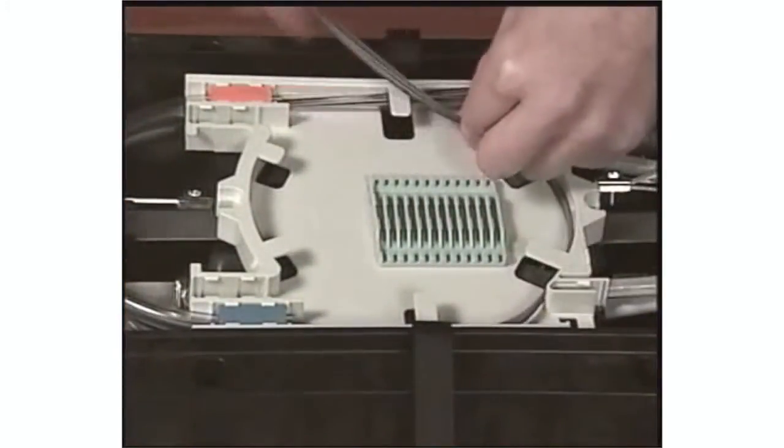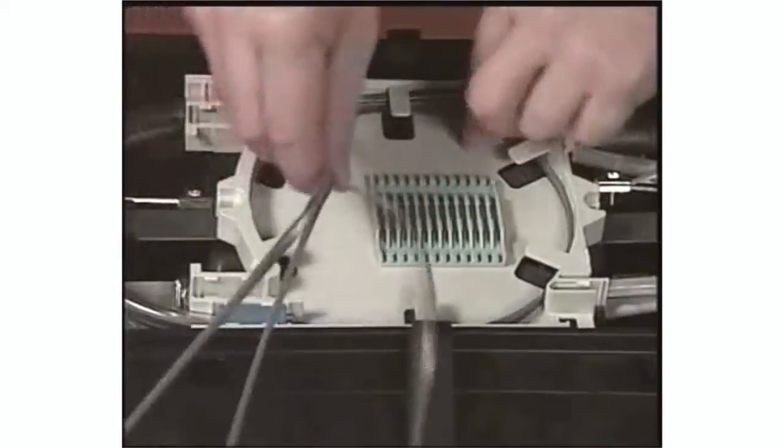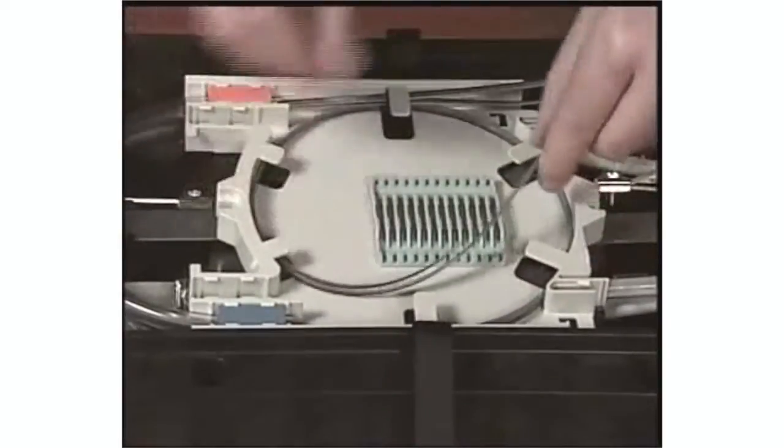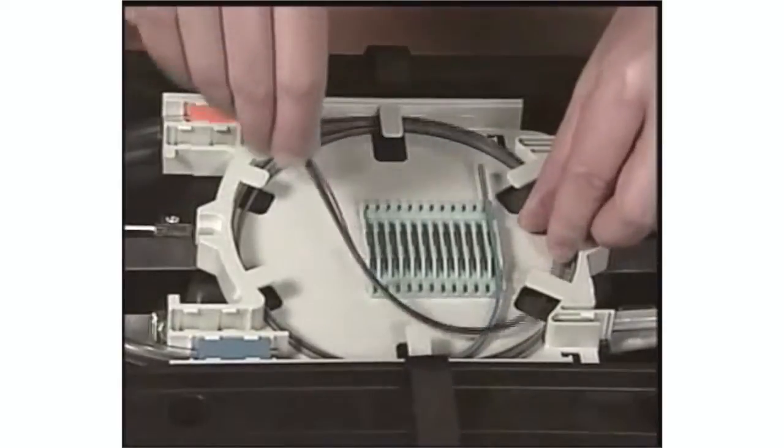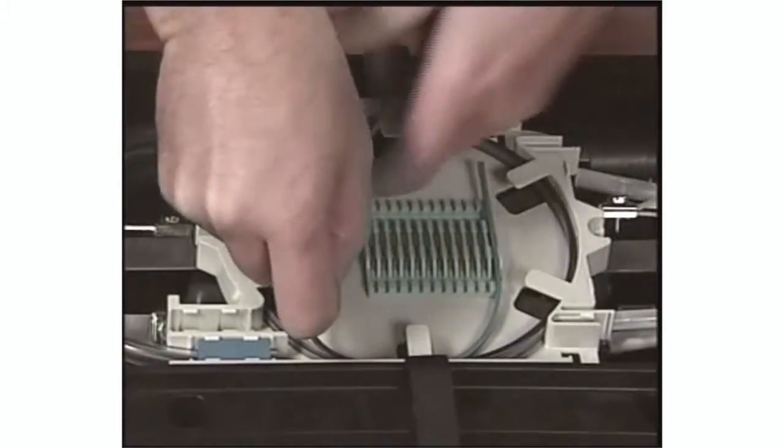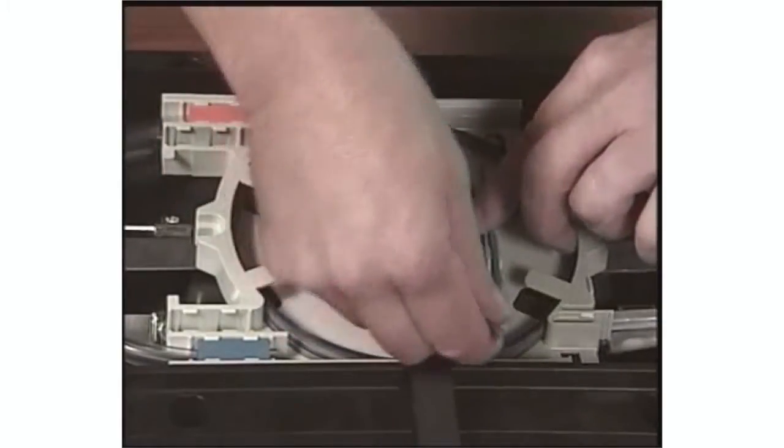Replace the fiber to be spliced one and a half times around the splice tray into each corresponding slot. Route the remaining fiber bundle one and a half times around the splice tray in the opposite direction into each corresponding slot.